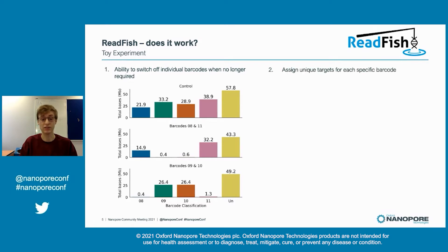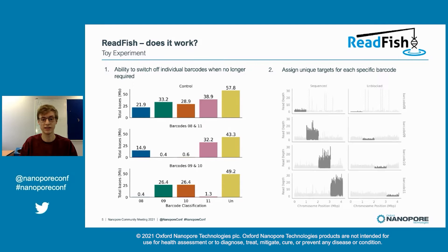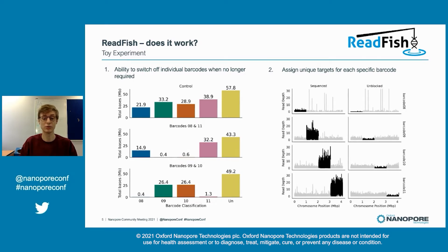Can we target specific loci on each barcode? Again, yes we can. With the same library as before, we target different quarters of the genome on each barcode, which are the regions shown in black.